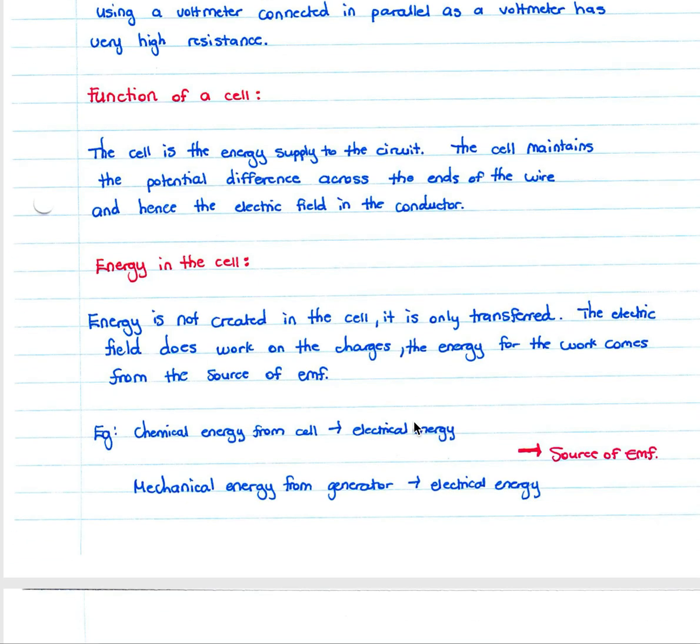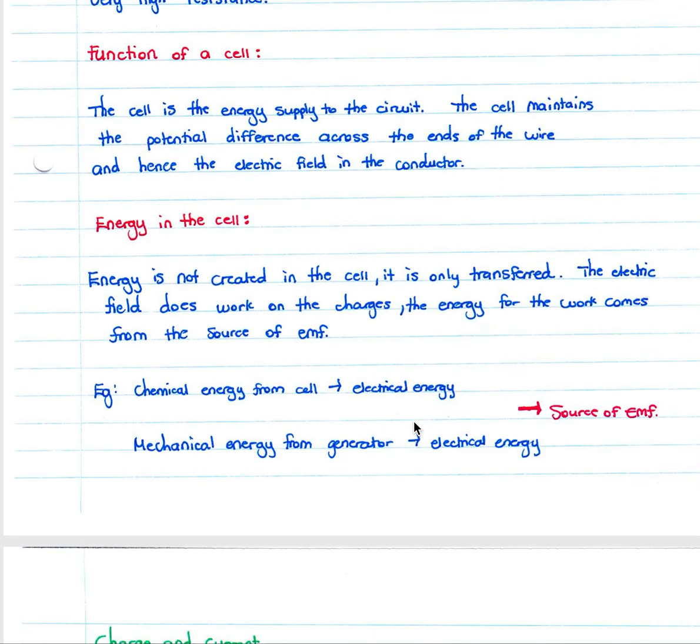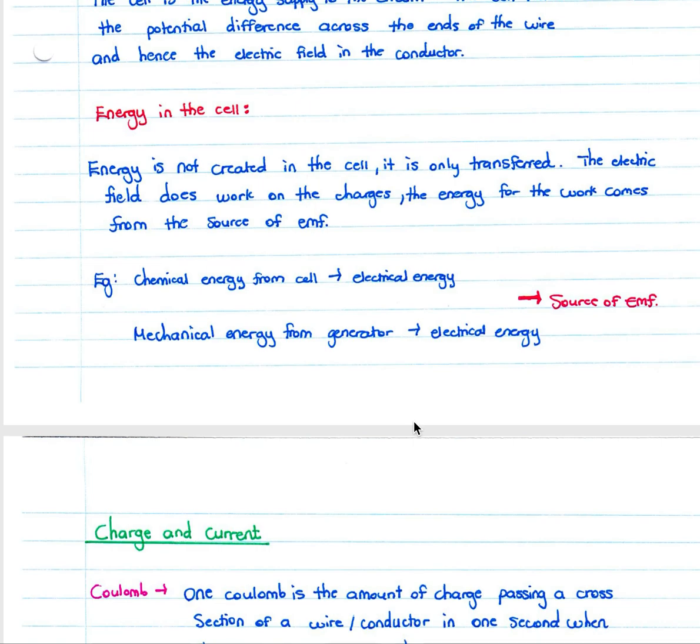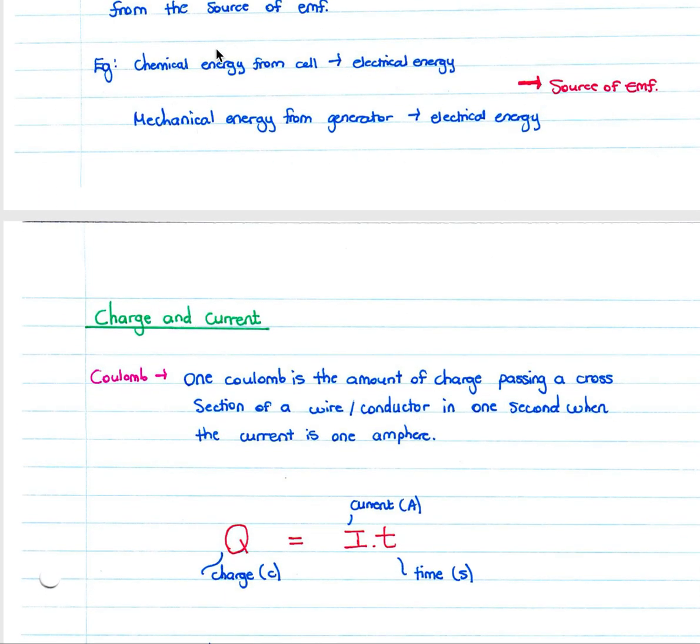Energy is not created in the cell, it is only transferred. The electric field does work on the charges. The energy for the wire comes from the source of EMF, which can be chemical energy from your cell transferred to electric energy, or mechanical energy from a generator.